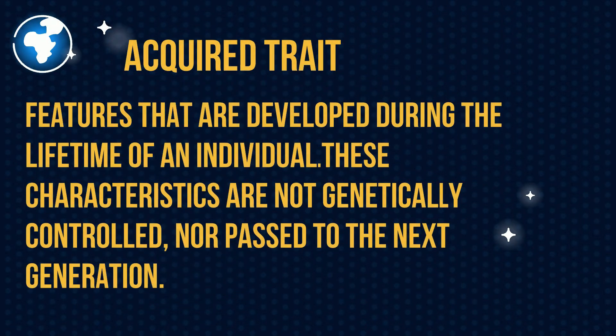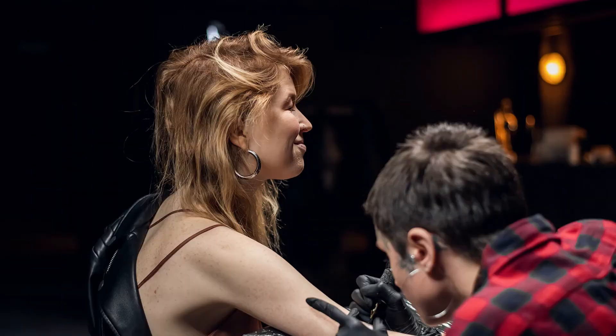Acquired trait: features that are developed during the lifetime of an individual. These characteristics are not genetically controlled nor passed to the next generation. As an example, the lady getting the tattoo will not pass the tattoo on to her offspring if she has offspring.